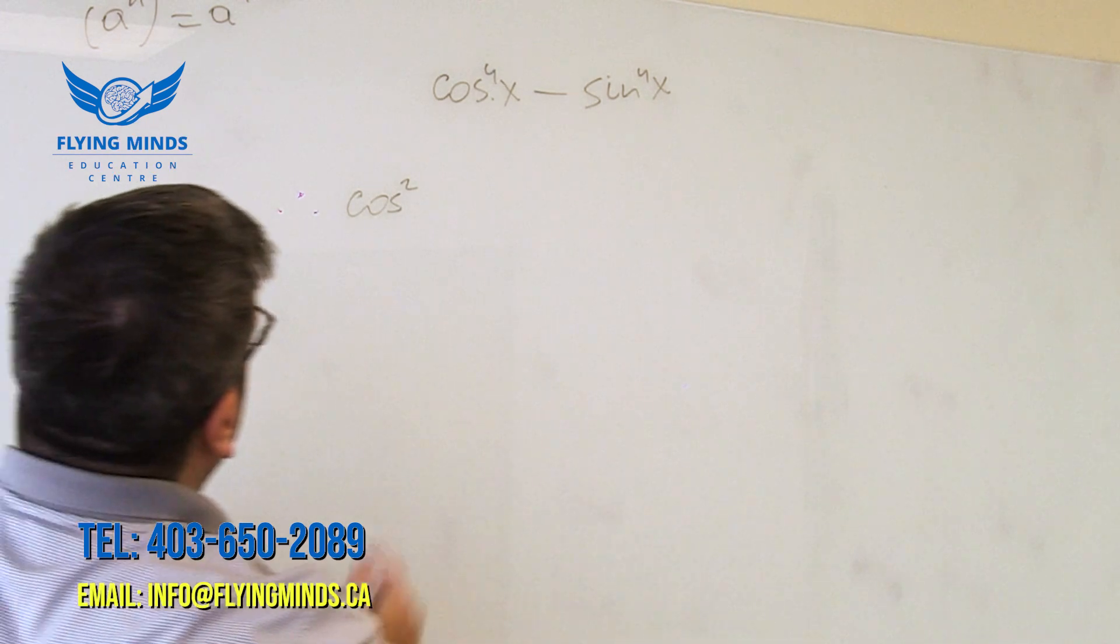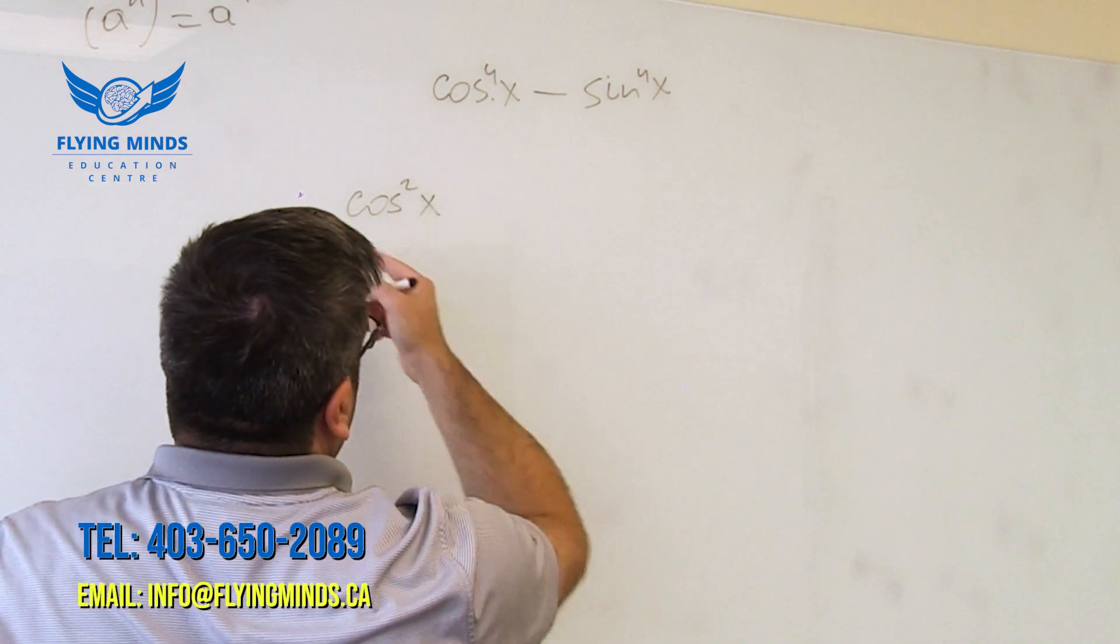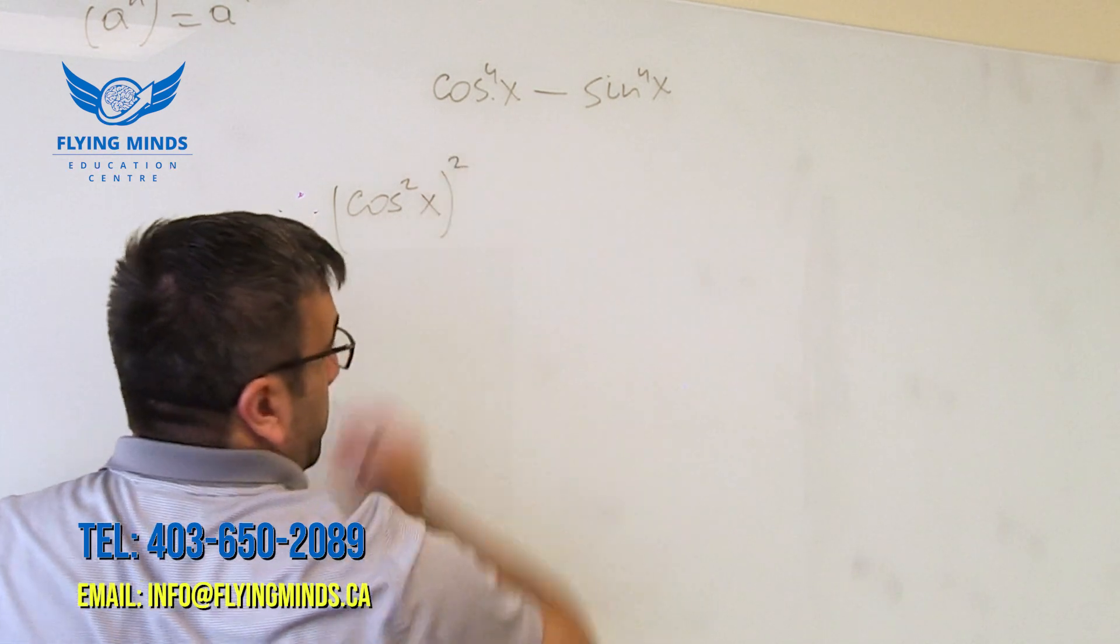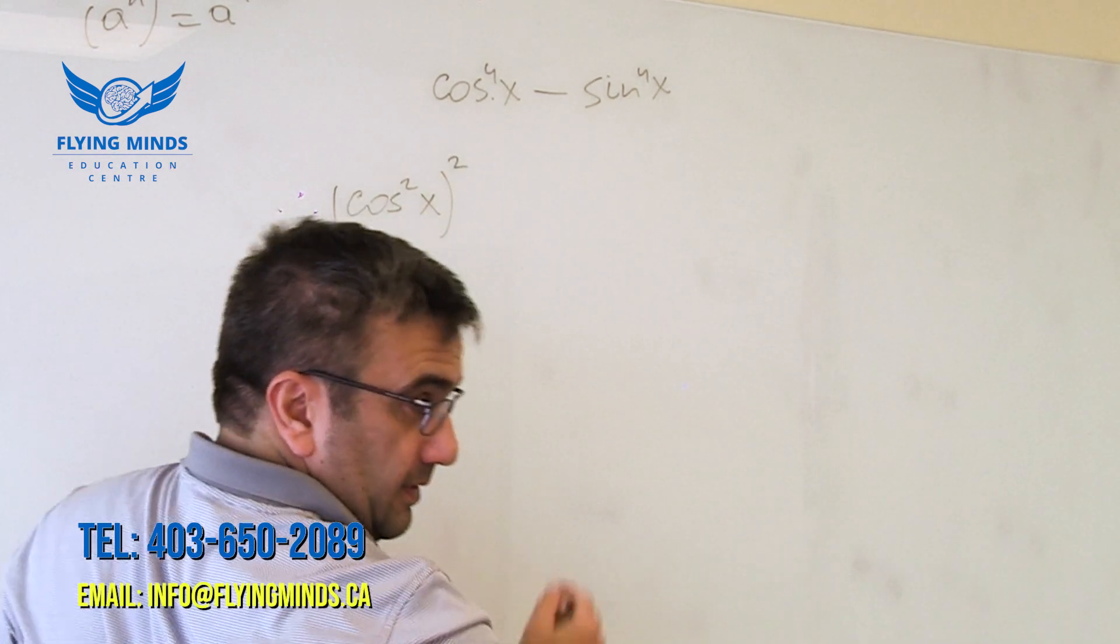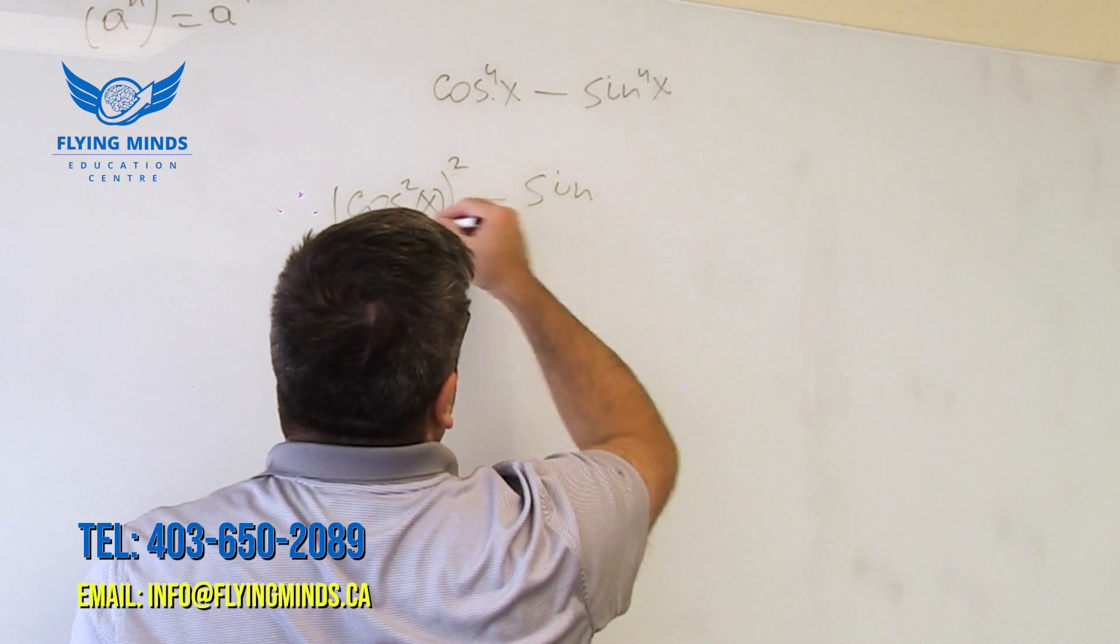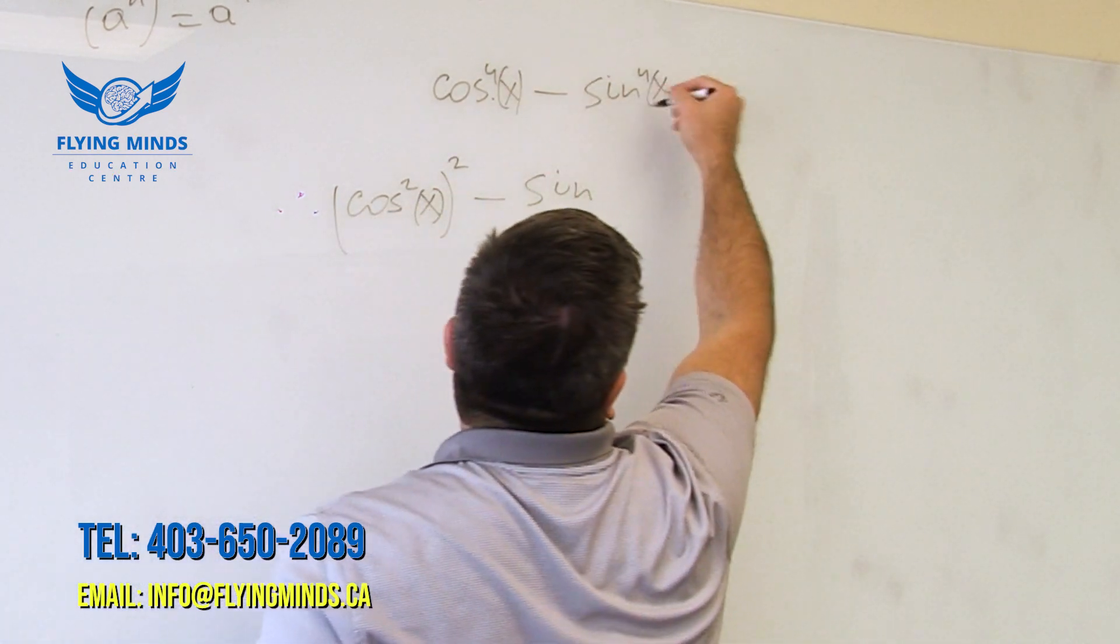M times M, right? So it means I can rewrite this as cosine squared x to the power of 2. Right? And then I can rewrite sine in the same way.